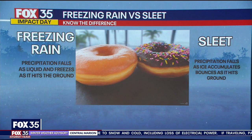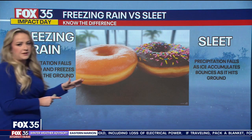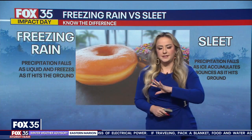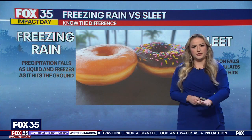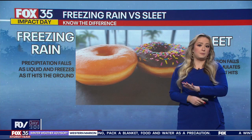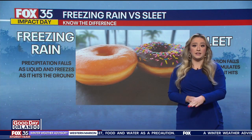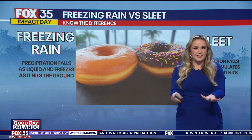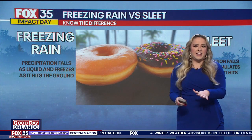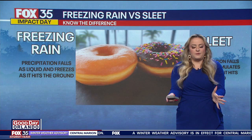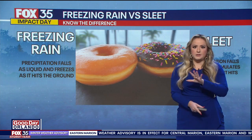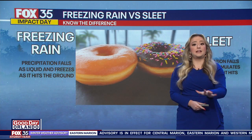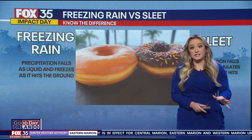Freezing rain is precipitation that falls as liquid. It's falling and when it reaches the ground — for example, a roadway — it freezes immediately. That's what creates that glaze of ice. Anything it hits, it kind of conforms around because it's going to freeze immediately, because whatever it's hitting is below freezing temperature.